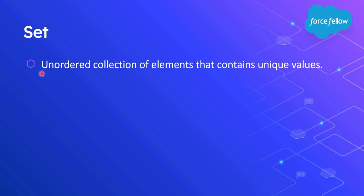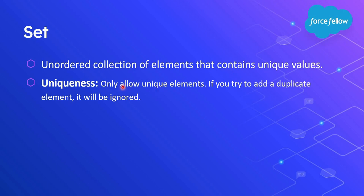Sets are the unordered collection of elements that can contain or store only unique values. It means if you want to store multiple values in a single container and you want to make sure that values should be unique, then we have to use sets instead of lists. As per this definition, a set mainly has two characteristics. The first is uniqueness, which means a set only allows storing unique elements, and if we try to add a duplicate element then the set will ignore it.